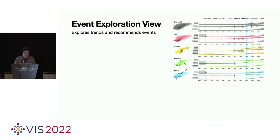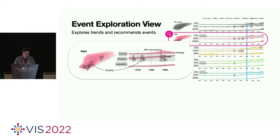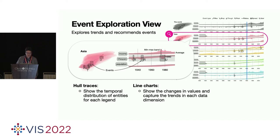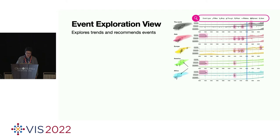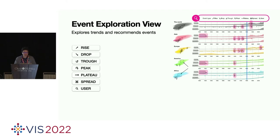The next view is event exploration view. For example, we can take this view of the second one for Asia in the Gapminder dataset. In the left side, we have whole traces to show the temporal distribution of entities for each legend. And we also use line charts to show the changes in values and capture the trend in each data dimension. There is an automated anomaly detection or event detection algorithm. And there are seven types of events: rise, draw, drop, peak, plateau, spread, and user-defined.